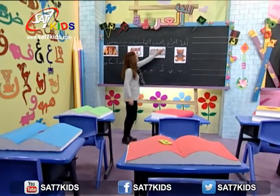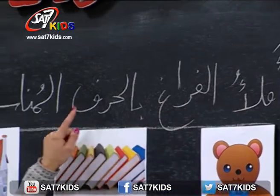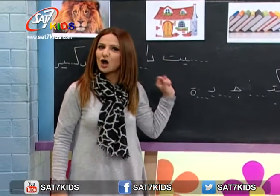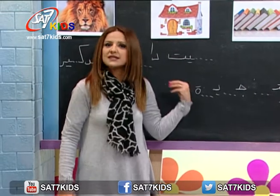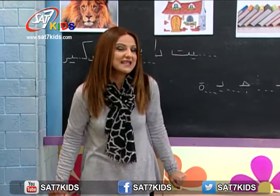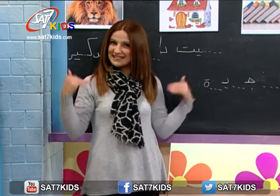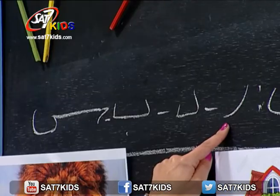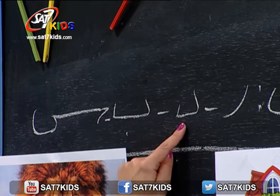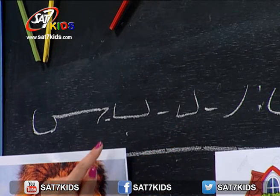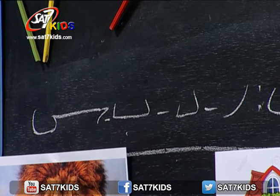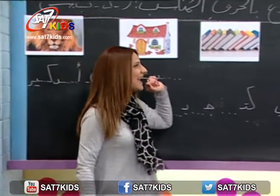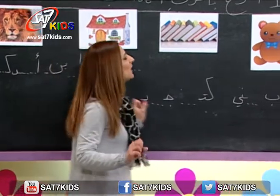تتذكروا أشكالهم؟ خلينا سوا نقرأ السؤال: أملأوا الفراغ بالحرف المناسب. يعني بدي حط مكان الفراغ بالكلمة الحرف المناسب تتصير الكلمة صحيحة. الأحرف يلي بدنا نستعملها هي: حرف الراء ر، حرف الدال د، حرف الباء ب، وحرف السين س. عندنا صور كتير حلوين تنقدر نعرف شو هي الكلمة وشو هو الحرف الناقص.